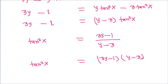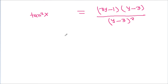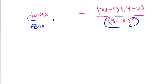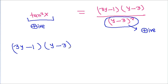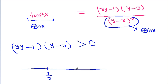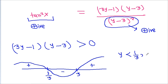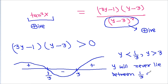We can write tan²(x) = (3y - 1)(y - 3) / (y - 3)². Since tan²(x) ≥ 0 and (y - 3)² > 0, we need (3y - 1)(y - 3) ≥ 0. By the wavy curve method, the critical points are y = 1/3 and y = 3. The expression is positive when y < 1/3 or y > 3, and negative in between. Therefore y never lies between 1/3 and 3.